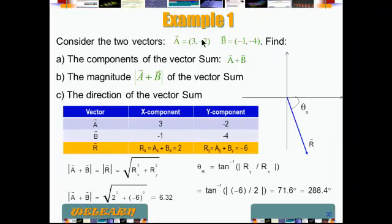Okay, so the components of A: 3, that's A sub x; minus 2, that's A sub y. Then for B: B_x is minus 1, B_y is minus 4. To find R_x, we add A_x to B_x, so 3 plus minus 1, that gives us 2.